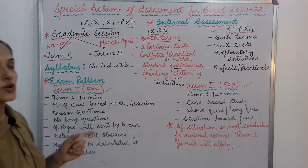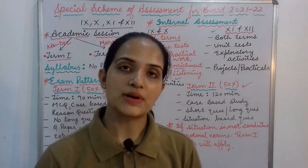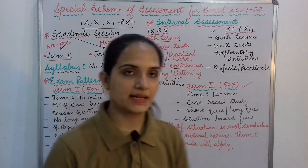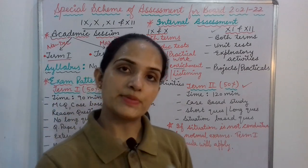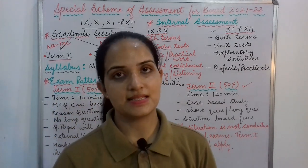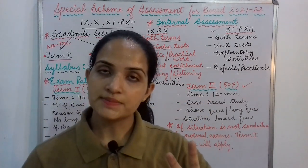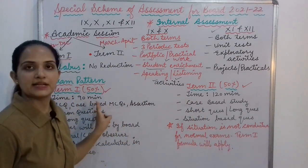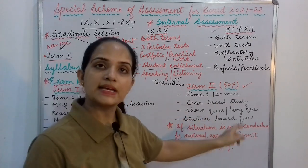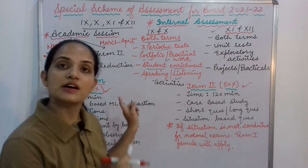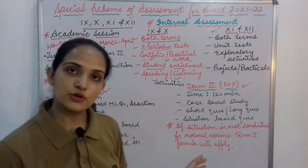A CBSE external observer may come to your school to ensure the exam is conducted smoothly. For Term 2, the exam duration will be 120 minutes, i.e., 2 hours, compared to 90 minutes for Term 1. Term 2 will include case-based study questions, short questions, and long questions, which were not present in Term 1. Situation-based questions will also be given. So Term 1 and Term 2 will have different formats.